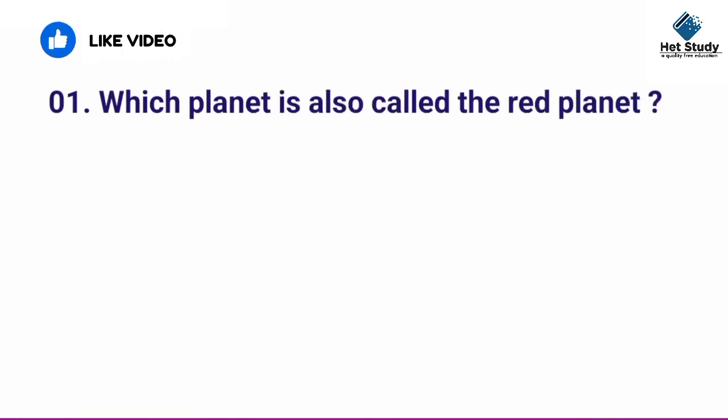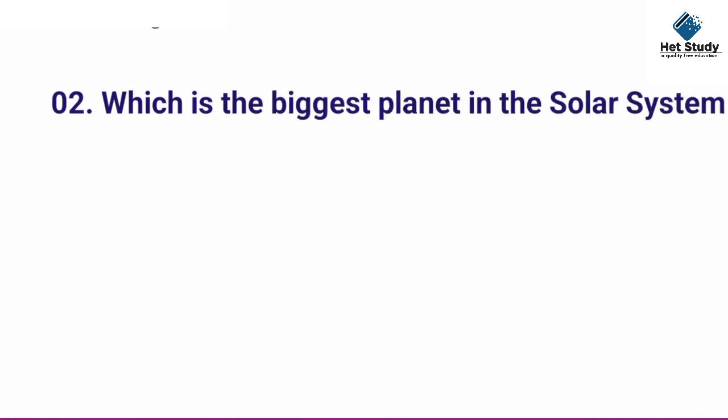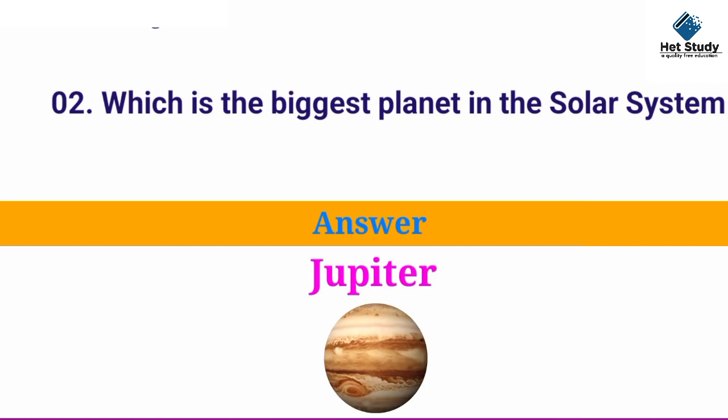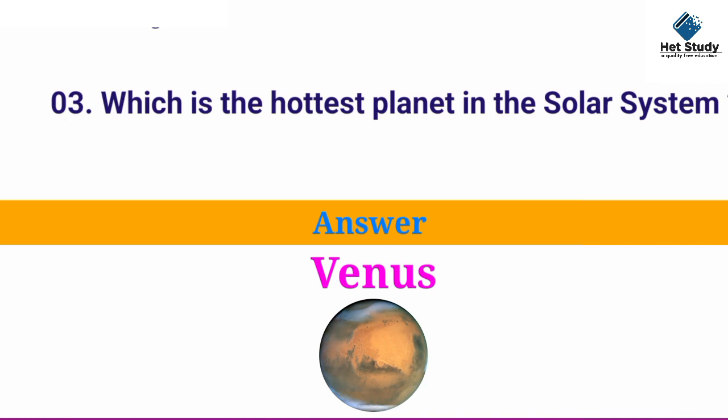Which planet is also called the red planet? Answer: Mars. Which is the biggest planet in the solar system? Answer: Jupiter. Which is the hottest planet in the solar system? Answer: Venus.